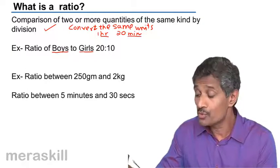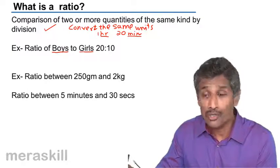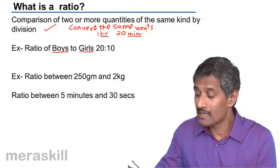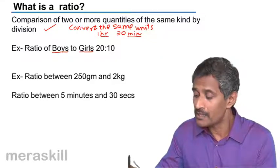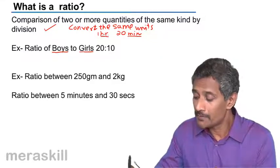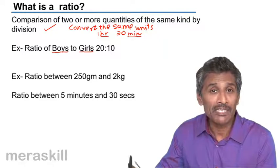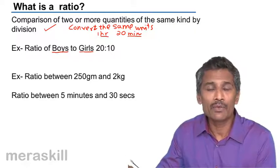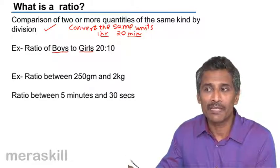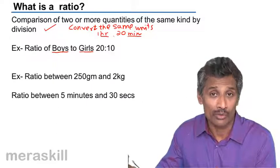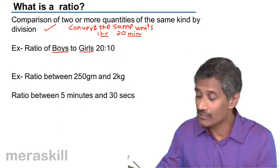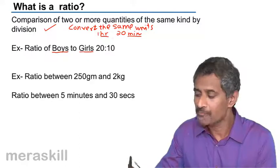Now if you take the ratio of the time that I spend to the time that Alan spends, and you directly find the ratio, it will turn out to be 1 is to 20, which gives you a deceptive feeling that Alan has worked more than me. So we need to convert either hours to minutes or minutes to hours.